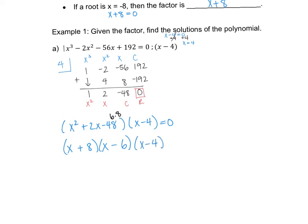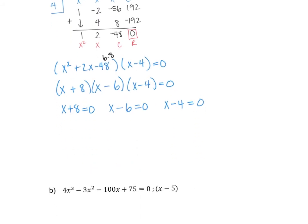Bringing down the factor x minus 4, I now set each factor equal to zero: x plus 8 equals zero gives x equals negative 8; x minus 6 equals zero gives x equals positive 6; x minus 4 equals zero gives x equals positive 4. So there are three solutions — the function crosses the x-axis at negative 8, positive 6, and positive 4.